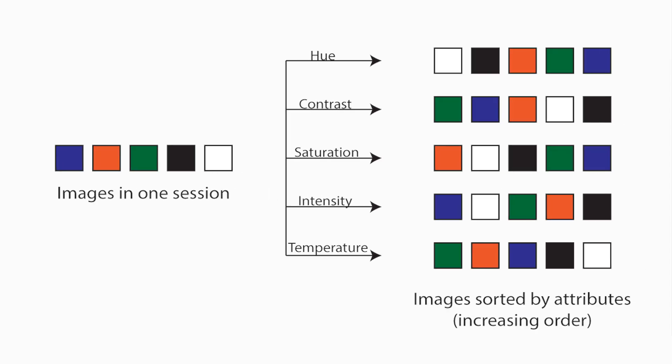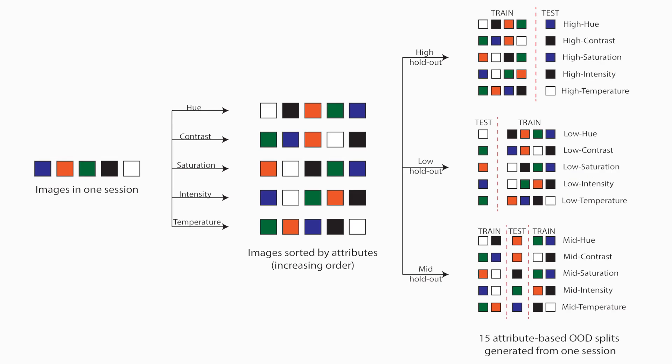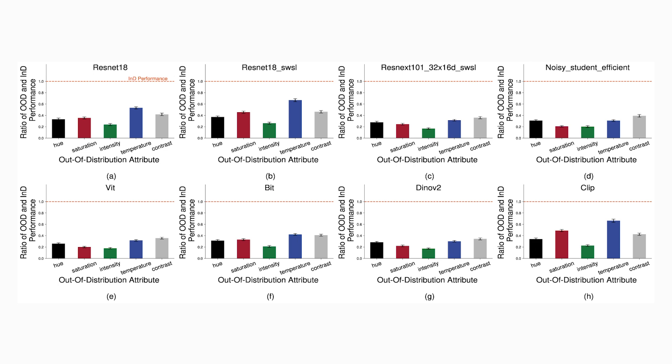So what we did is we took brain data and split it into different chunks. For the first set, we took low contrast images as the training set and high contrast images as the test set. We trained on the low contrast images and then tested on the out-of-distribution high contrast images. What we found is that these models of the brain do not generalize.